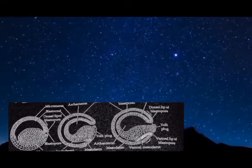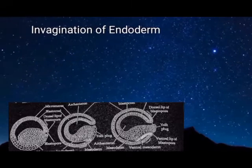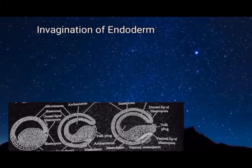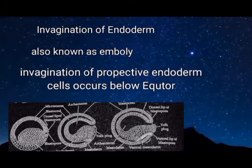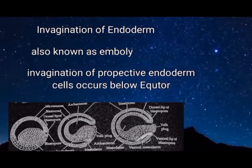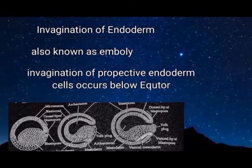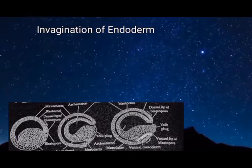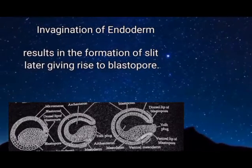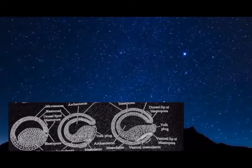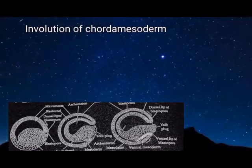The second morphogenetic movement in gastrulation is invagination of endoderm, also known as emboly. The invagination of prospective endoderm cells occurs below the equator, exactly below the midpoint of the gray crescent of the blastula. It results in the formation of a slit, later giving rise to the blastopore.